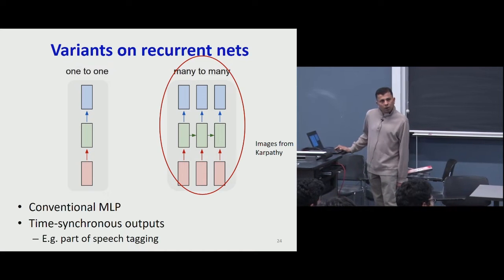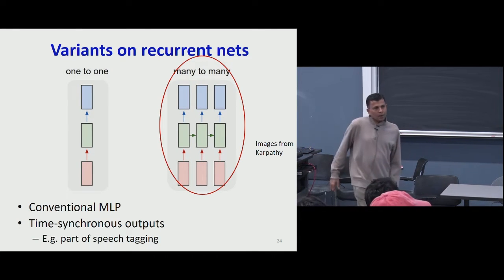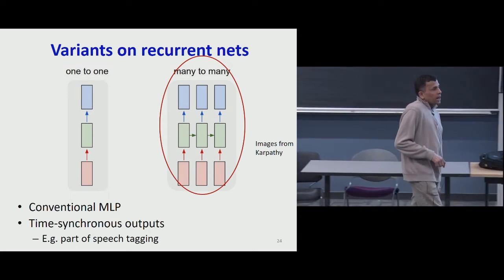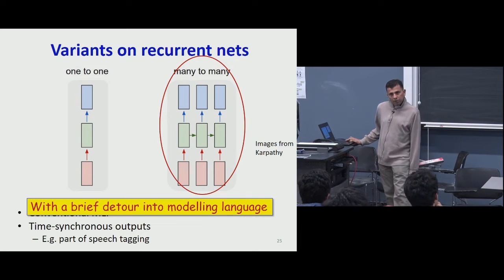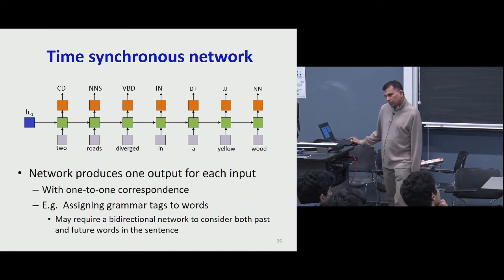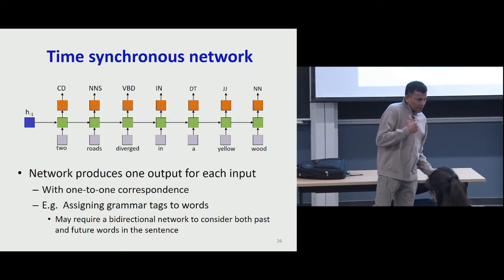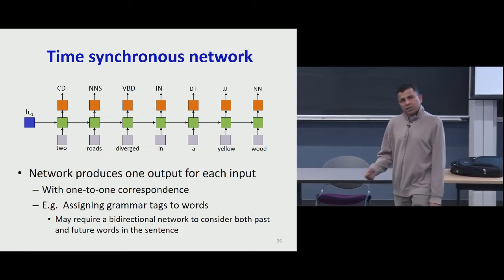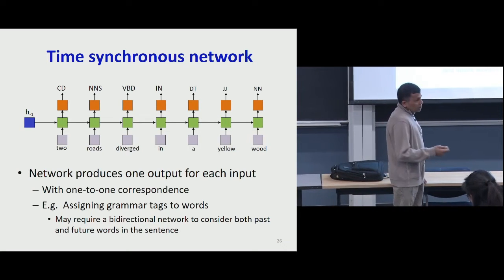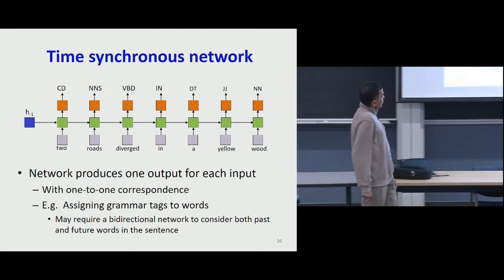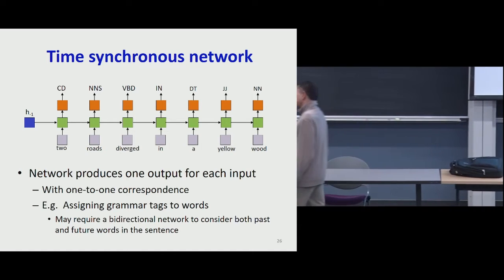For instance, if you've got a sequence of words like 'two roads diverged in a yellow wood,' the objective is to assign a part-of-speech tag to every single word with a one-to-one correspondence. You'd want to analyze the sequence of words and say 'two' is a counting word, 'roads' is a plural noun, 'diverged' is a verb, 'a' is a determiner, 'yellow' is an adjective, 'wood' is a noun — assigning tags to every one of these words.